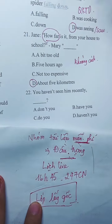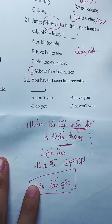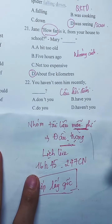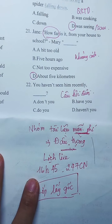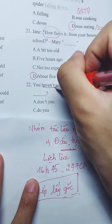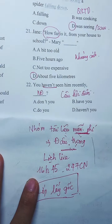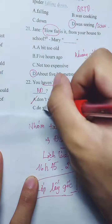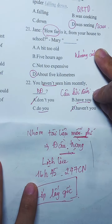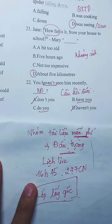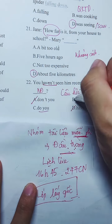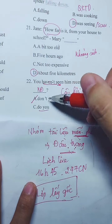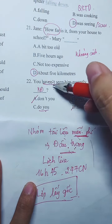Câu 22 thuộc chuyên đề câu hỏi đuôi. Nếu thấy câu phủ định thì đuôi chọn khẳng định. Loại những cái phủ định đi. Còn lại 'have' hoặc 'do you' - lấy trợ động từ từ phần trước. Đây là thì hiện tại hoàn thành nên dùng 'have'. Nếu là hiện tại đơn thì dùng 'do you'.